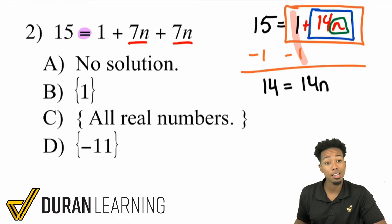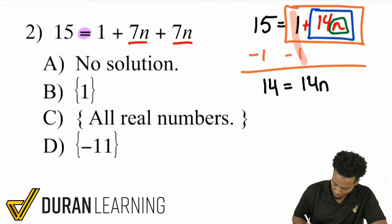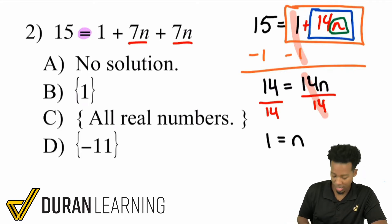So the last step here is to get the n by itself. We're going to go ahead and divide both sides by that 14. And we're good to go. So here, divide both sides by 14. And that's going to cancel out on the right side. And then 14 divided by 14 is 1. So 1 equals n. And that's our answer.